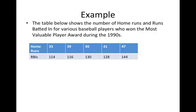The table below for our example shows the number of home runs and runs batted in for various baseball players who won the most valuable player award during the 1990s. So this 33 home runs is one value for a particular player, and that particular player had 114 RBIs. These two values go together. Here's an X, here's a Y. The next pair are for another player: 39 home runs and 116 RBIs. The third player had 40 home runs and 130 RBIs. The fourth player had 41 home runs, 128 RBIs, and our last player had 47 home runs and 144 RBIs.